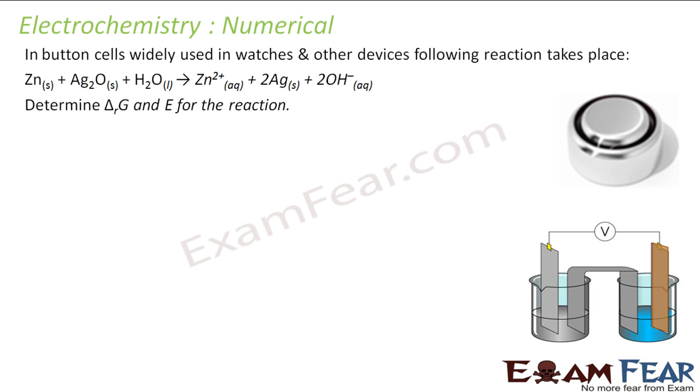The button cell widely used in watches and other devices, the following reaction takes place. Actually we'll study button cells in the next few slides. Here the reaction is zinc is oxidized to zinc ions and Ag₂O is reduced to Ag. Now we have to find ΔG° and E°.